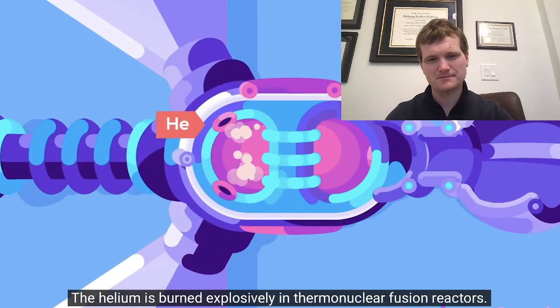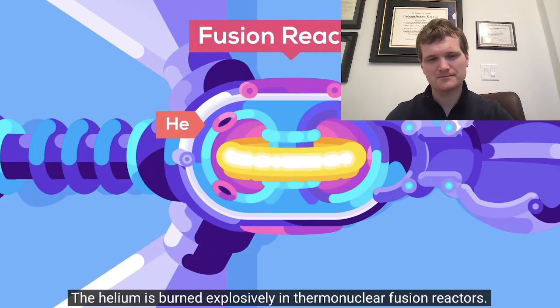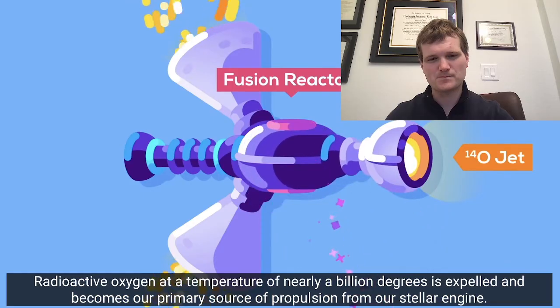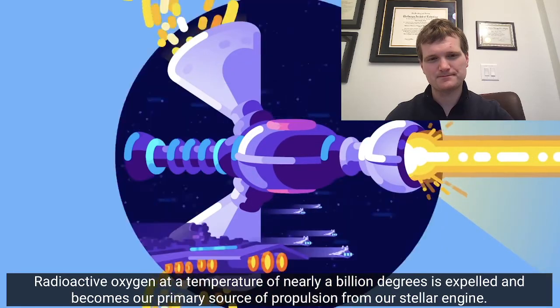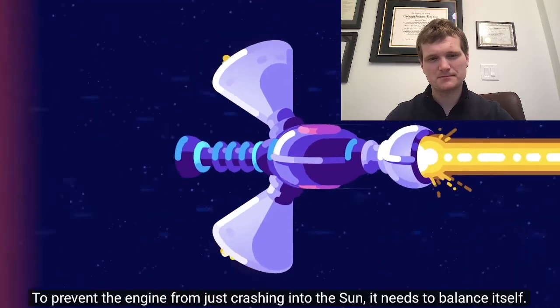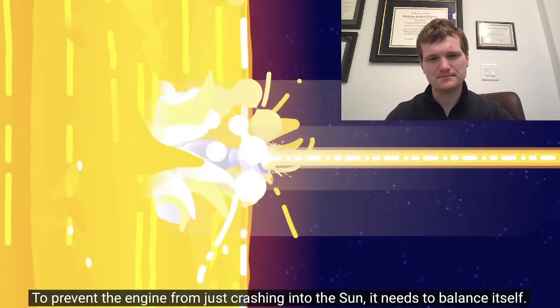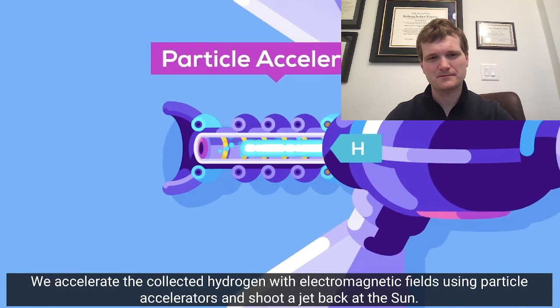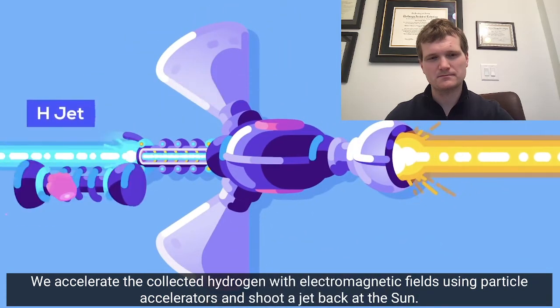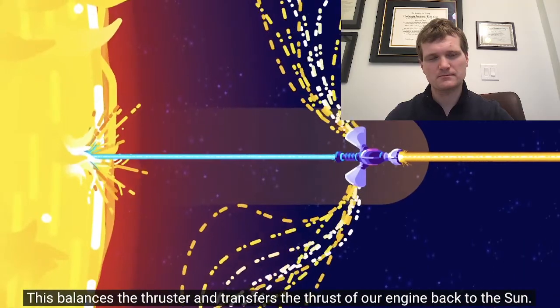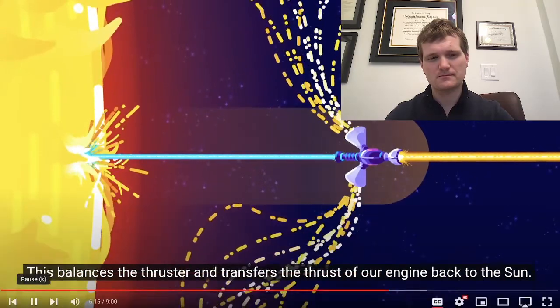The helium is burned explosively in thermonuclear fusion reactors. A jet of radioactive oxygen at a temperature of nearly a billion degrees is expelled and becomes our primary source of propulsion from our stellar engine. To prevent the engine from just crashing into the sun, it needs to balance itself. To do this, we accelerate the collected hydrogen with electromagnetic fields using particle accelerators and shoot a jet back at the sun. This balances the thruster and transfers the thrust of our engine back to the sun.